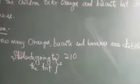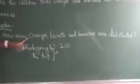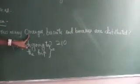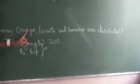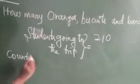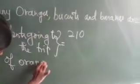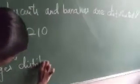So oranges, bananas and biscuits are distributed to all students. For each student, how many oranges are distributed? Only one. So how many oranges are distributed in total? 210 oranges are distributed. Count of oranges distributed is equal to 210.